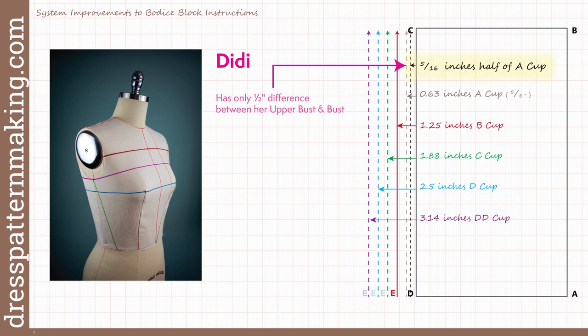Therefore, it would seem that she would only need to go out five sixteenths of an inch from the upper bust rectangle, rather than the five eighths of an inch needed by the A bust cup, since it's half the amount of the A bust cup. However, that five sixteenths of an inch is insufficient. Didi actually needs the full amount of an A cup.